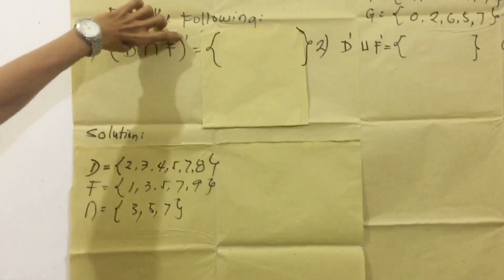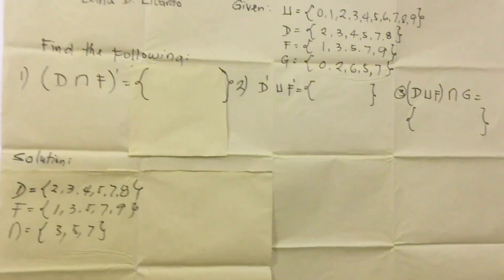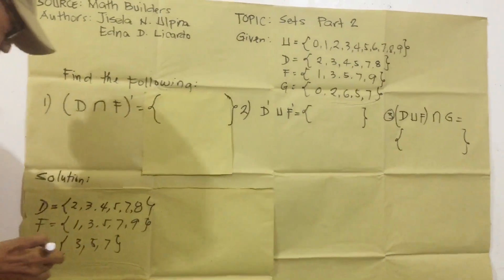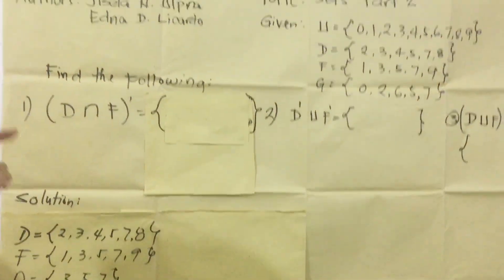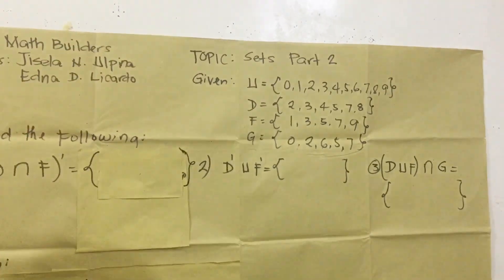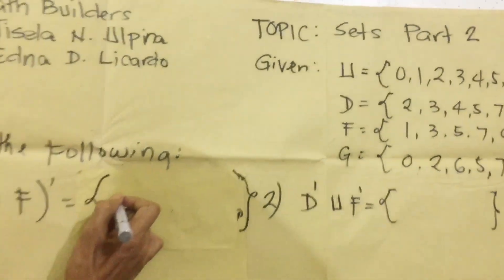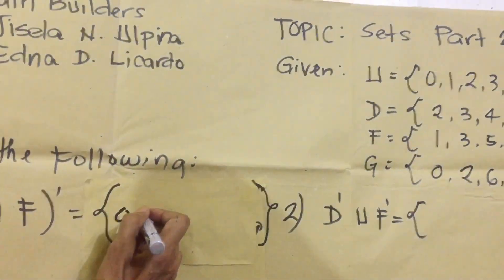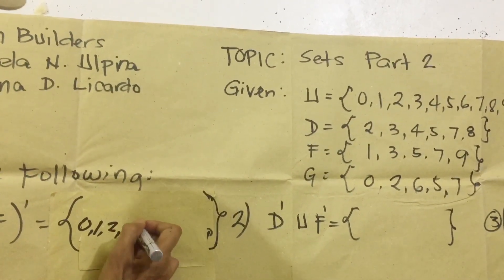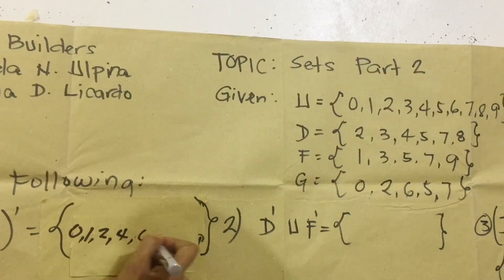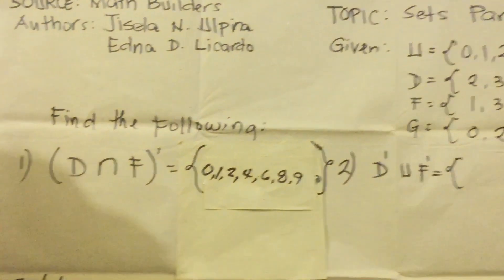Ang susunod ay to find the complement. Ang complement ay manggagaling sa universal. So ito na yung intersection natin, 3, 5, 7. Nanggagaling yan sa universal dito. 3, 5, 7 meron na. Yung wala, yun ang i-record natin dito: 0, 1, 2, 4, 6, 8, and 9. Ayan ang sagat natin ngayon.